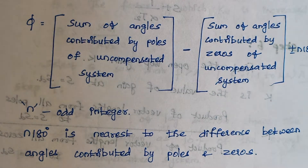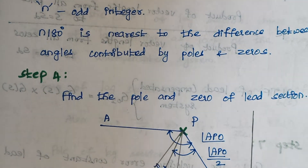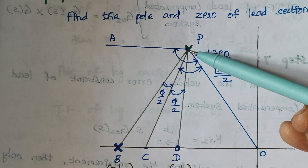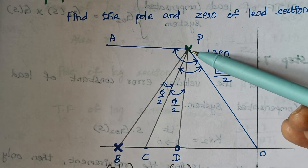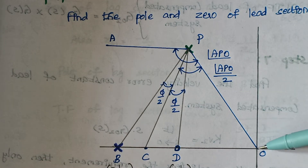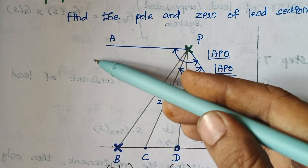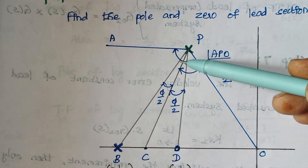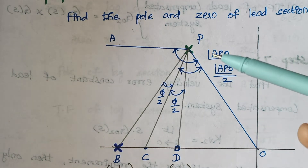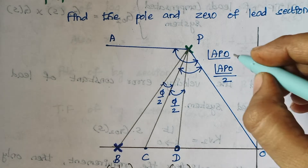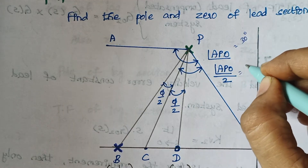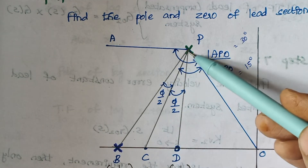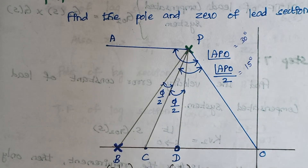Step 4: Finding the pole and zero of the lead section. First, mark the dominant pole p. Draw a line from the origin to point p, then draw a straight line parallel to the x-axis. Measure the angle — the angle APO is measured here. Then draw a bisector line for this angle; for example, if the angle is 30 degrees, then APO divided by 2 will be 15 degrees. This bisector line meets the x-axis at a point denoted as C.